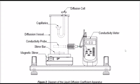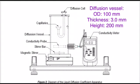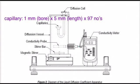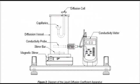This is the diagram of the liquid diffusion coefficient apparatus. As you can see from the apparatus just shown, we have the diffusion vessel — this is the whole diffusion vessel. Inside, we have the capillaries, and this is the diffusion cell. This is the conductivity probe, which is connected to the conductivity meter, and this is the stirrer bar and the magnetic stirrer.